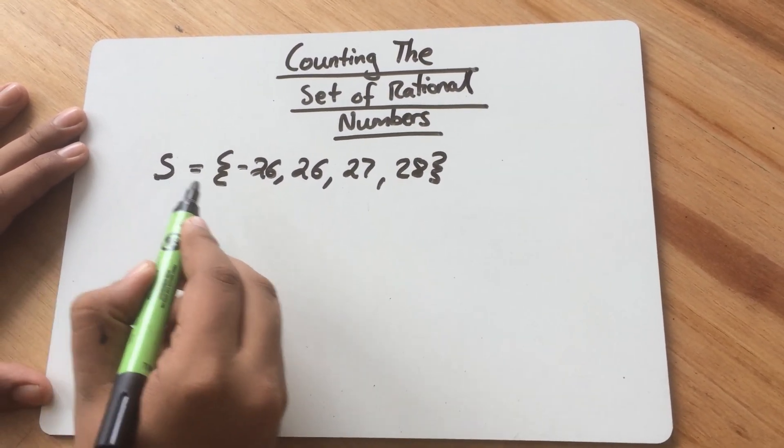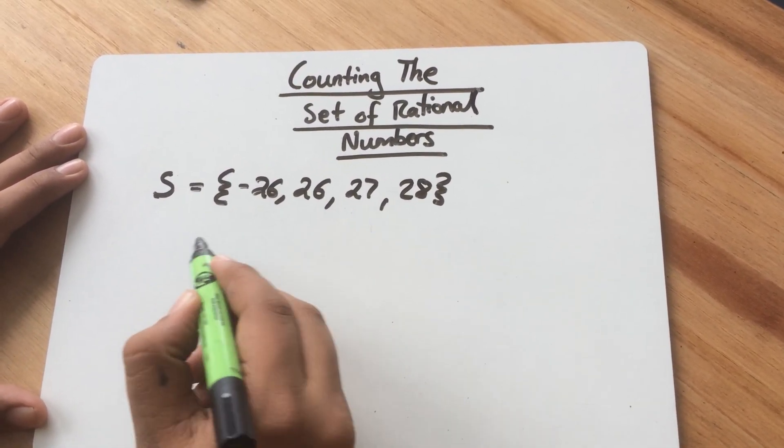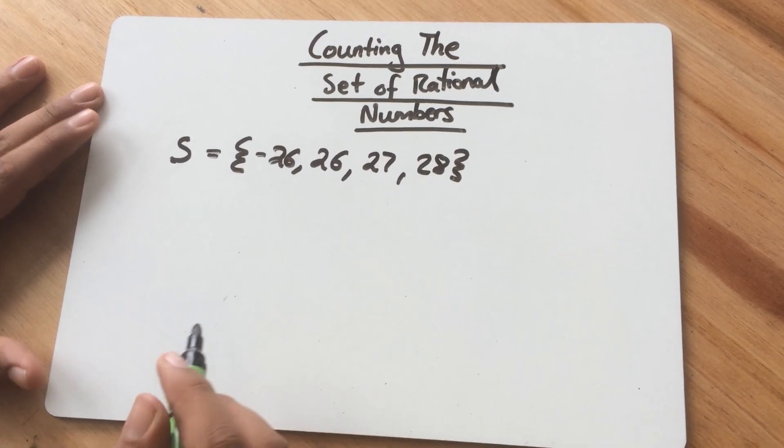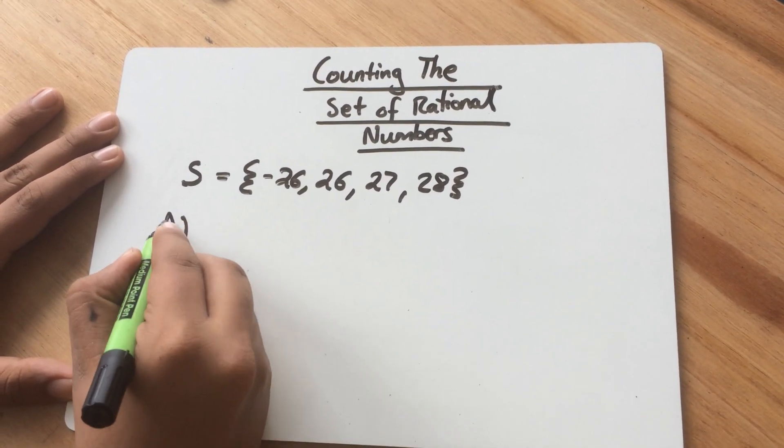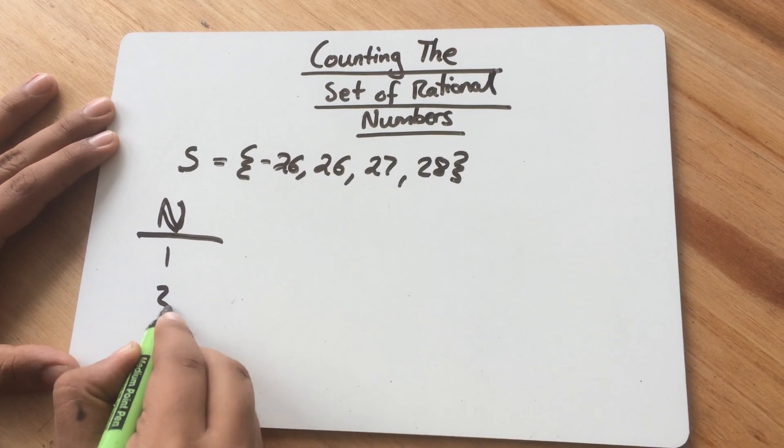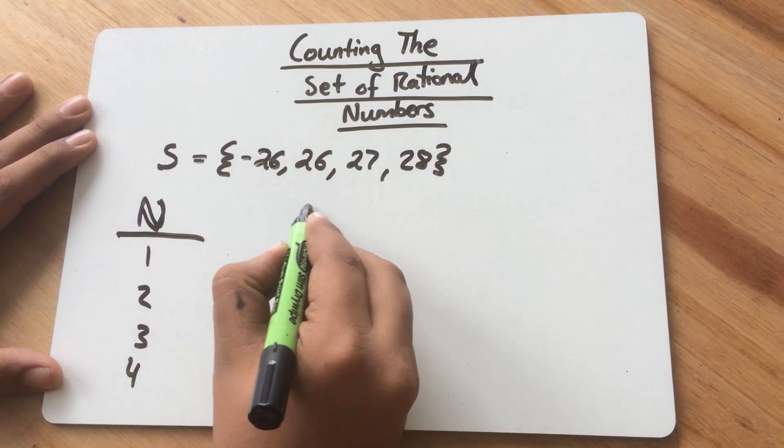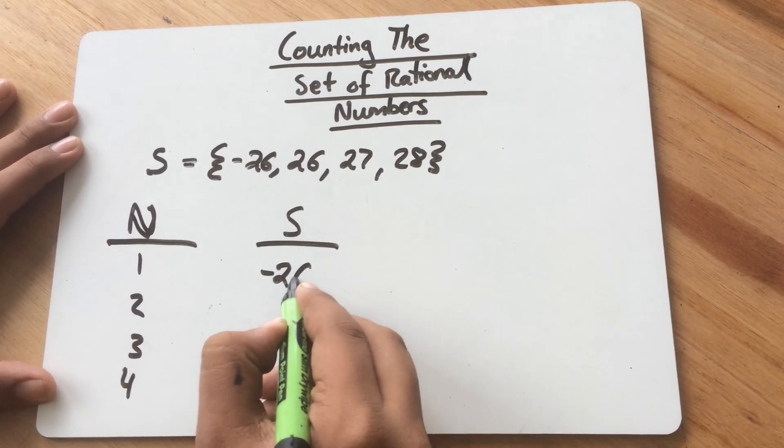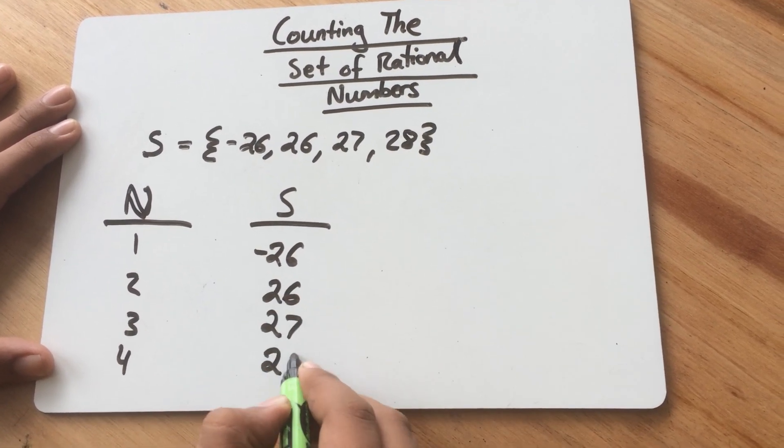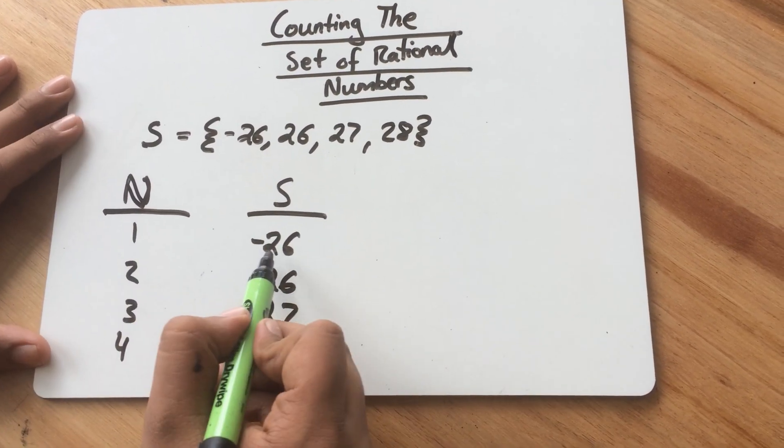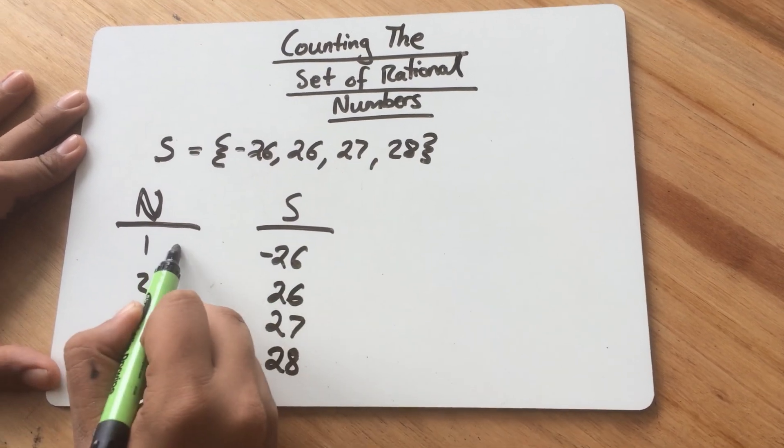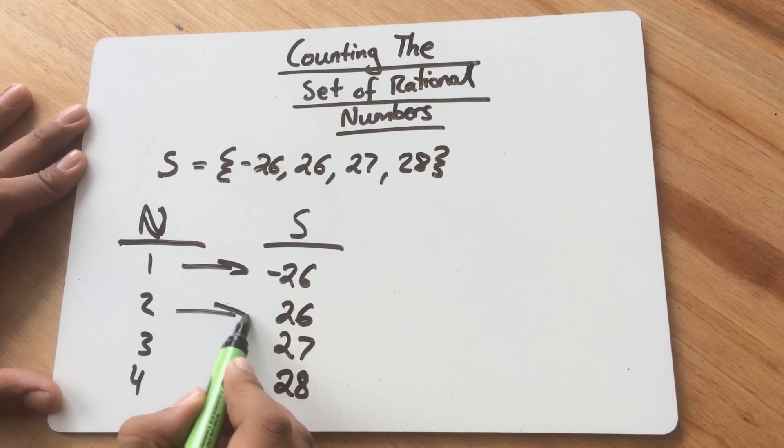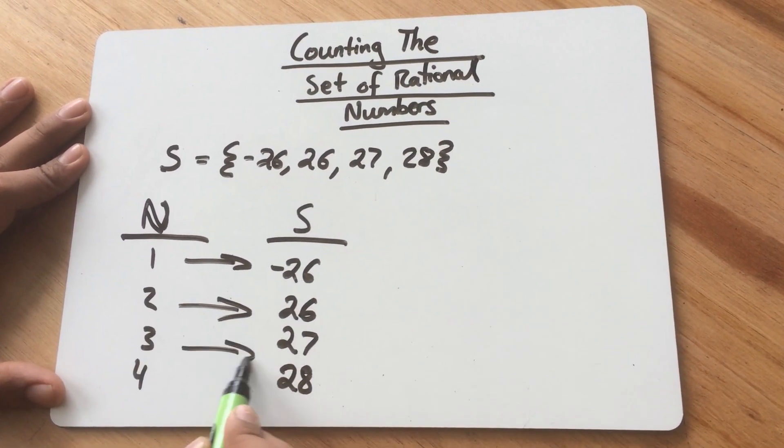So we have to associate each of these elements with an element of the natural numbers. So let's have all the natural numbers here. So we have 1, 2, 3, 4, and the elements of S here, minus 26, 26, 27, and 28. So we can associate the element of negative 26 with the natural number 1, and 26 with 2, and so on.